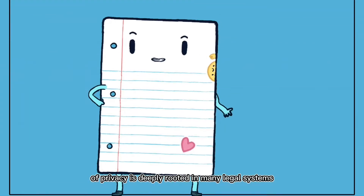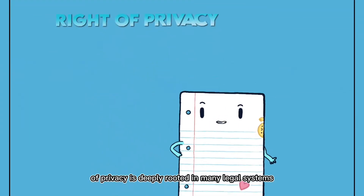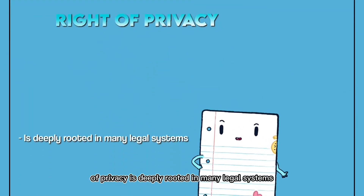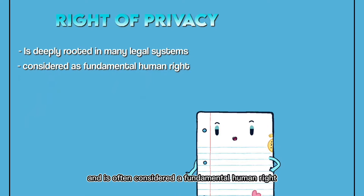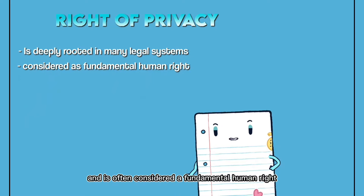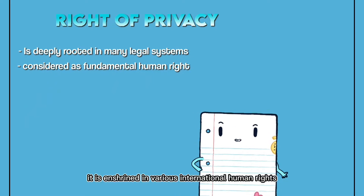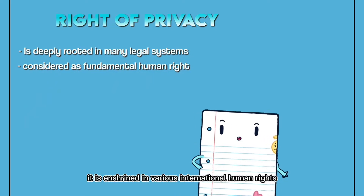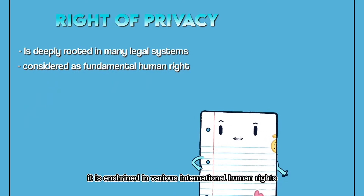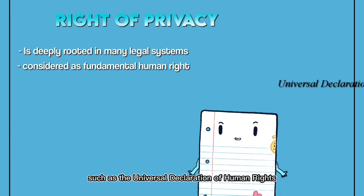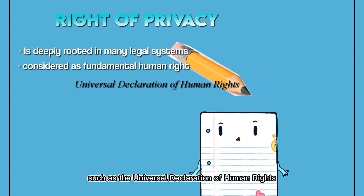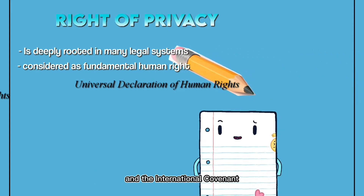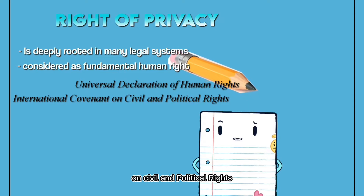The right of privacy is deeply rooted in many legal systems and is often considered a fundamental human right. It is enshrined in various international human rights instruments, such as the Universal Declaration of Human Rights and the International Covenant on Civil and Political Rights.